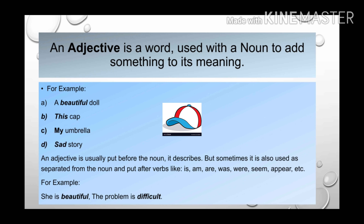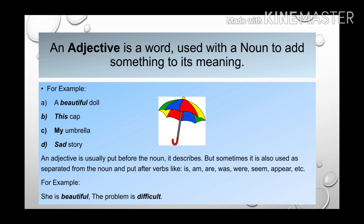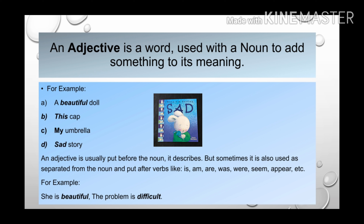Here, the word doll is the noun and beautiful is the adjective, as it is explaining more about the doll. Let's take another example: This cap. Here the word cap is the noun and the word this is the adjective, as it is telling us which is referred to. Another example is my umbrella. Here the word my is the adjective which is telling about the position of the noun umbrella.